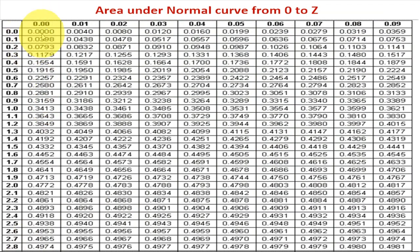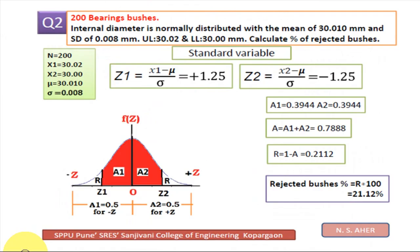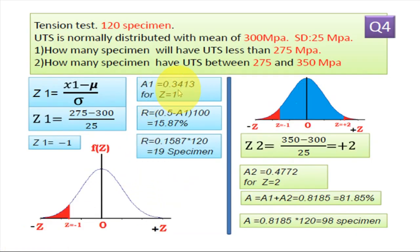So 0 to minus 1, so minus 1 means, so here 1, the area is, area under the curve z is equal to 1 is 0.3413. So this much is the area A1 equal to 0.3413.